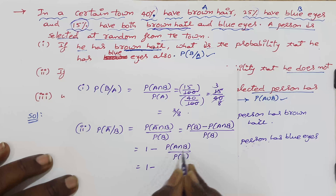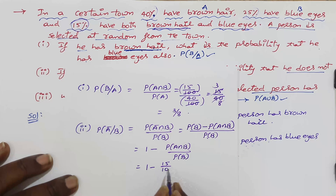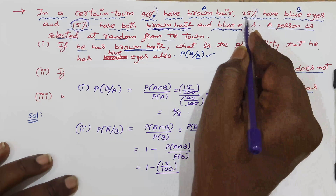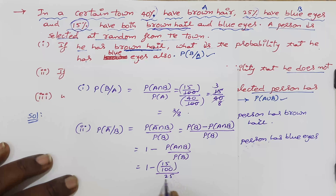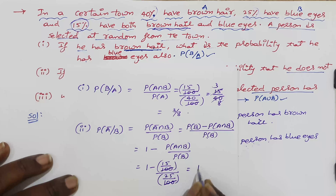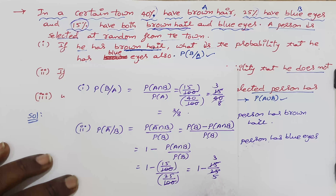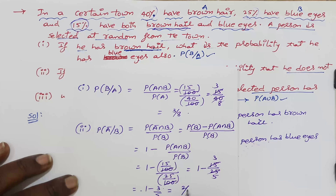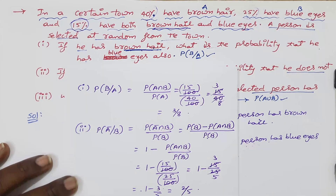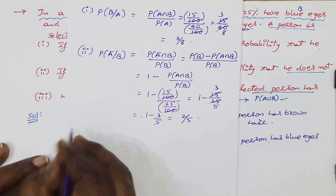So P(Ā|B) = 1 − (15/100) / (25/100). The 100s cancel, giving 1 − 15/25 = 1 − 3/5 = 2/5.